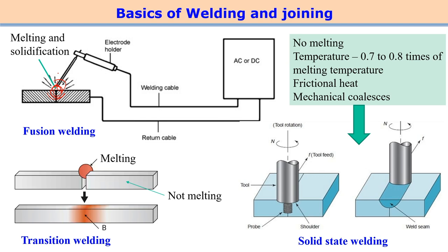The electrode metal is deposited on the substrate metal to bond the two components. In the case of a consumable electrode, the electrode melts and is deposited on the workpiece. Once melting occurs, as the welding torch moves, the liquid phase gradually converts to solid phase, and bonding happens between the two components during solidification. The electrode can be either consumable or non-consumable, and the current can be either AC or DC depending on the material and welding process.